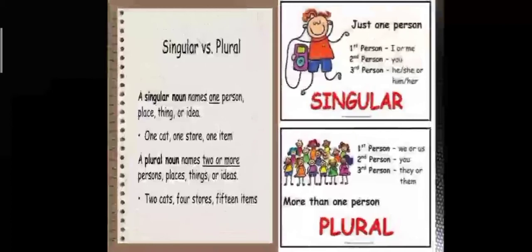With singular nouns, we use: I, me, you, he, she, him, her. And with plural nouns, we use: we, us, you, they, them.